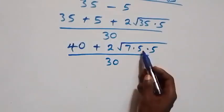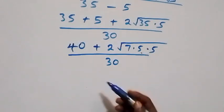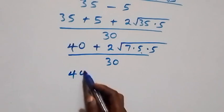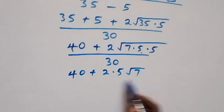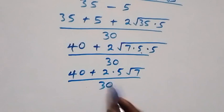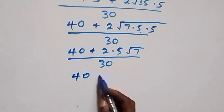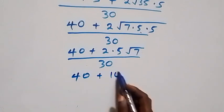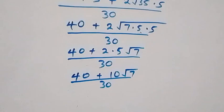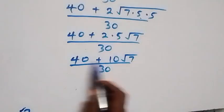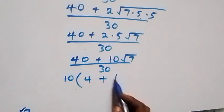So 35 + 5 = 40. For the middle term, 2 × √(35 × 5): we write 35 as 7 × 5, so we have 2 × √(7 × 5 × 5) = 2 × √(25 × 7). √25 = 5, so that gives 2 × 5 × √7 = 10√7. Thus we have 40 + 10√7 over 30. Ten is common, so we factor out 10: 10 × (4 + √7) over 30.